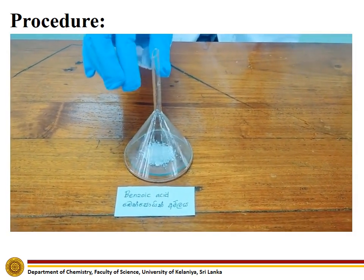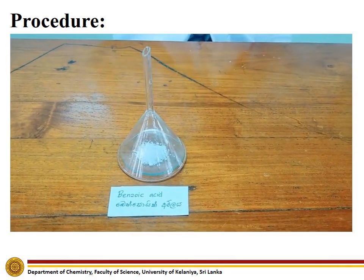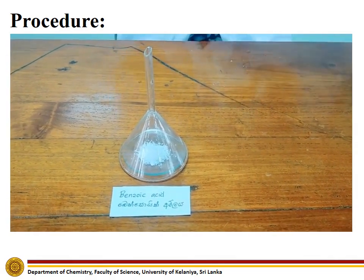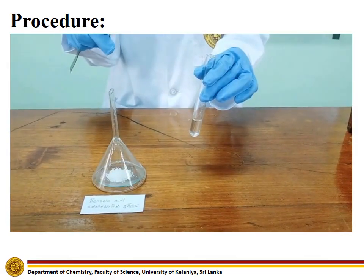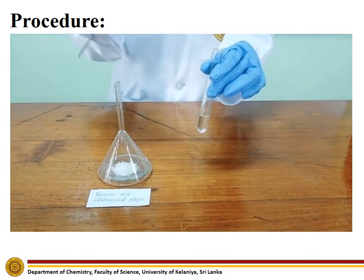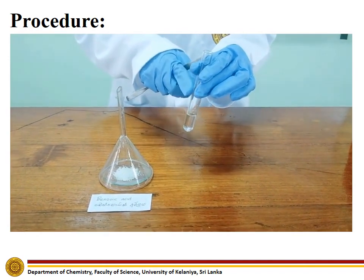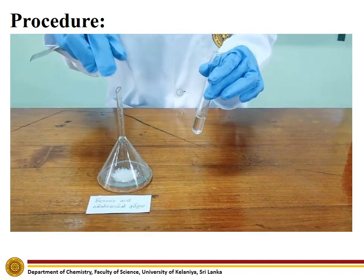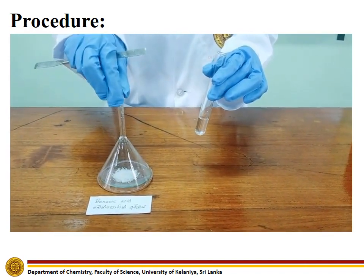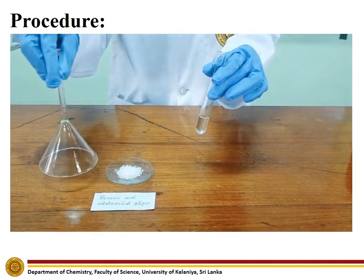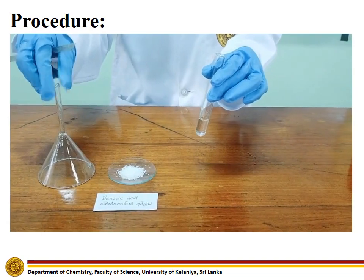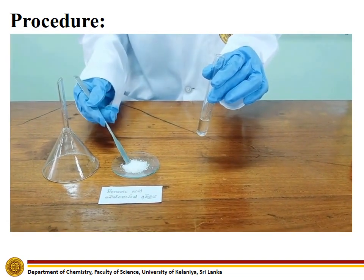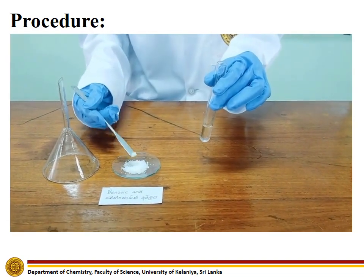Next, we are going to perform all the experiments on benzoic acid. To carry out the first experiment, add benzoic acid to a test tube containing water and check whether it is completely miscible in water.